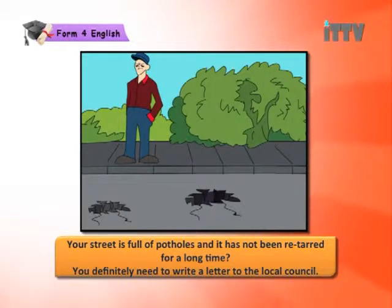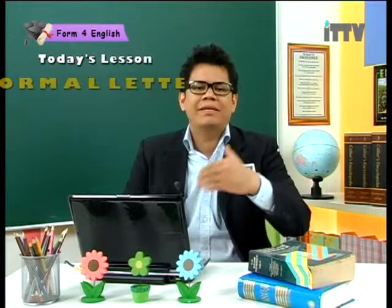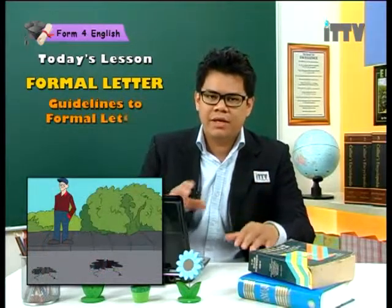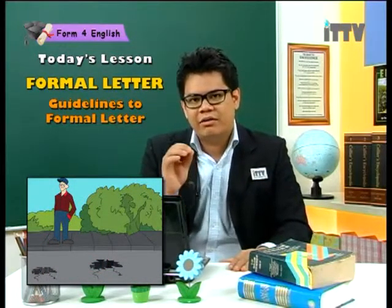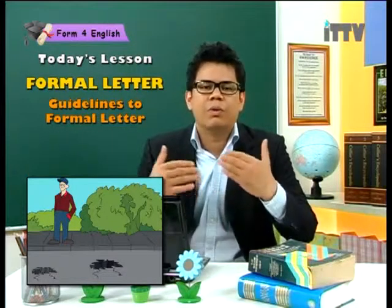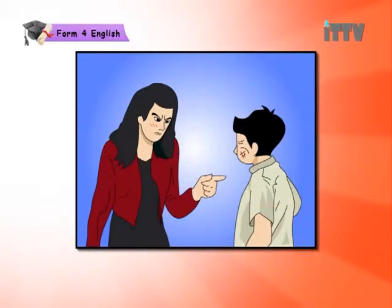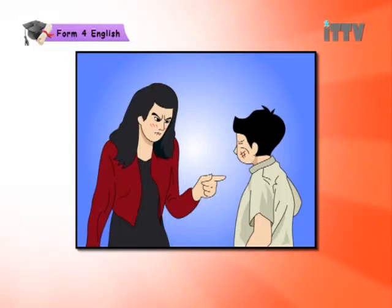Here we see a picture of a road with so many potholes. Your street is full of potholes and it has not been repaired for a long time. You definitely need to write a letter to the local council. Your letter will be addressed to the local council, and you need to write a formal letter telling them about the potholes and how you want them to be repaired.